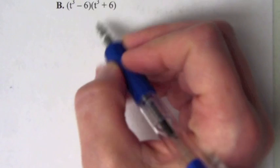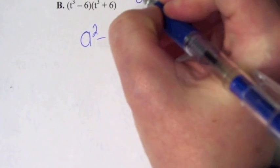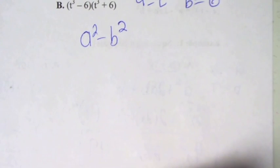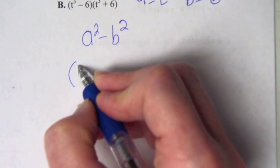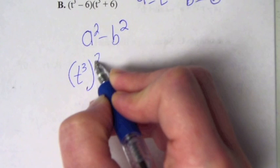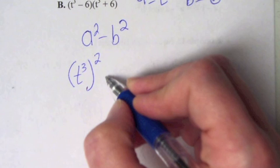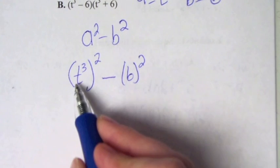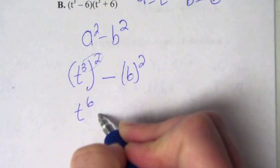For letter B, same thing — we use a squared minus b squared. A equals t cubed and b equals 6. Be careful when plugging in a, because a is t cubed and then squared — that's a power to a power. From chapter 8 you know how to handle that: multiply the exponents. So we get t to the sixth power minus 36.